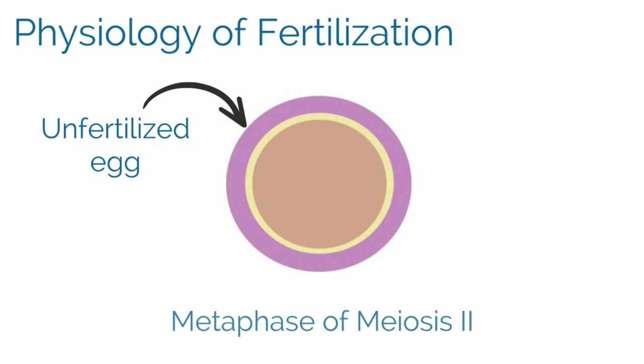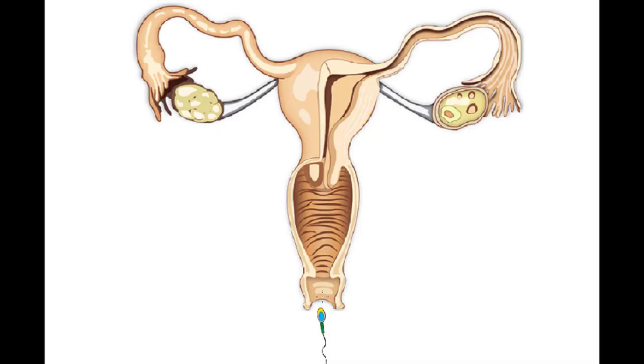To fully understand the pathophysiology of molar pregnancy, it is first important to understand how normal fertilization occurs. After ovulation, the unfertilized egg is arrested in metaphase of meiosis II. As sperm travel up the female reproductive tract, they undergo capacitation — a series of changes in the sperm plasma membrane that increase its affinity for the oocyte.